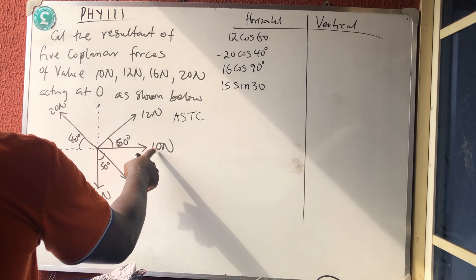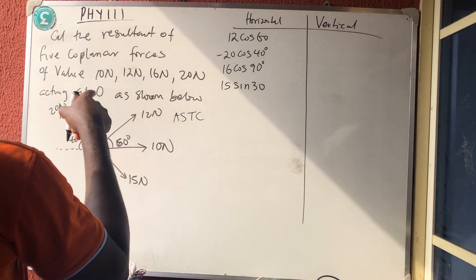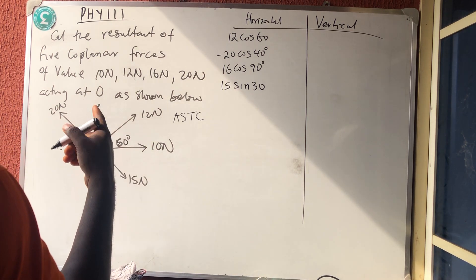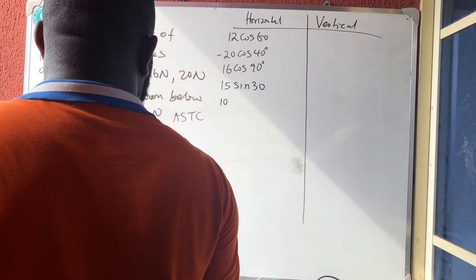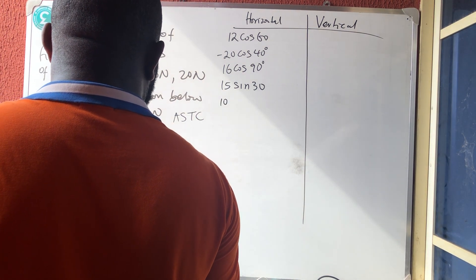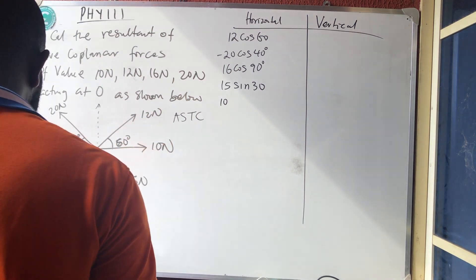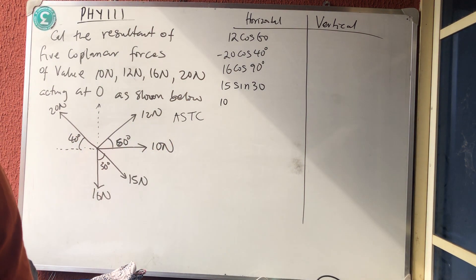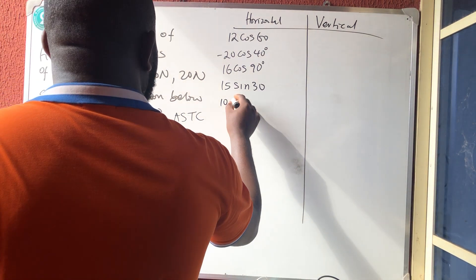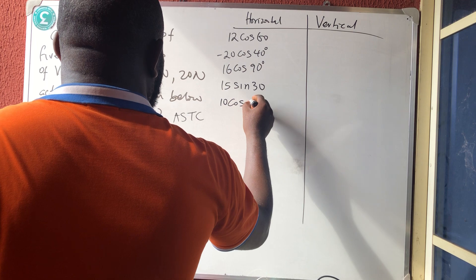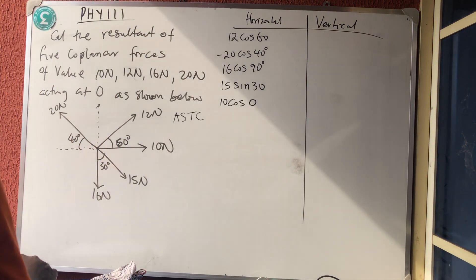The last horizontal force is 10 Newtons. It's not moving at a drill — it's moving to itself — so its horizontal component is 10 cos 0°. We are done with the horizontal resolution.